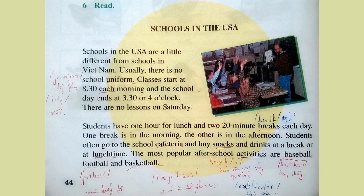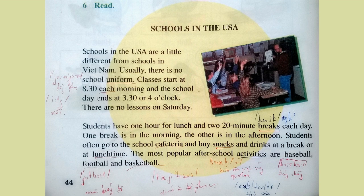Exercise 6: Read. Pages 46 and 47. Schools in the USA. Schools in the USA are a little different from schools in Vietnam. Usually there is no school uniform. Classes start at 8.30 each morning, and the school day ends at 3.30 or 4 o'clock. There are no lessons on Saturday. Students have one hour for lunch and two 20-minute breaks each day — one in the morning and one in the afternoon. Students often go to the school cafeteria and buy snacks and drinks at lunchtime or at break. The most popular after-school activities are baseball, football, and basketball.